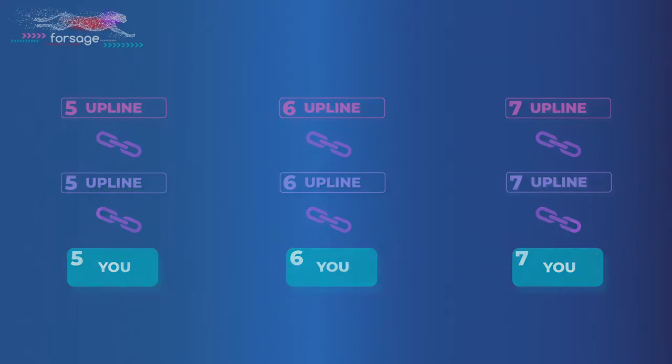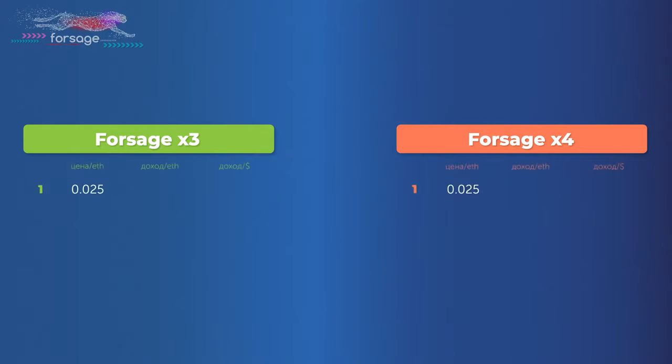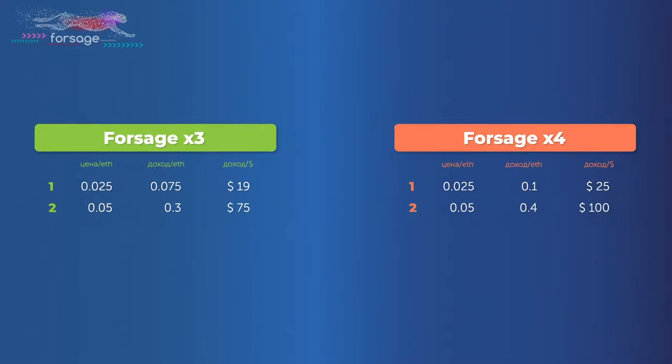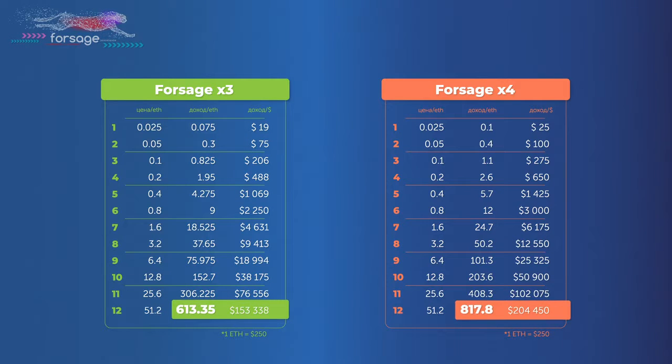Let's calculate how you can have income. For example, in the first week you went through a circle of the first level slot. At X3 your income is 0.075 ETH, and at X4 0.1. In the second week you went through a circle of second slot, and the first slot you went one more circle. And the income is already 0.3 plus 0.4 ETH. If you move this way one slot a week, then in 12 weeks you will go to the 12th slot, and your full income will be 613.35 with X3, and 817.8 ETH with X4. Total 1430 ETH. At the rate 250, this is more than 350 thousand dollars. And then, you no longer need upgrades. All slots are activated, and endlessly through a circle of reinvest bring your income.